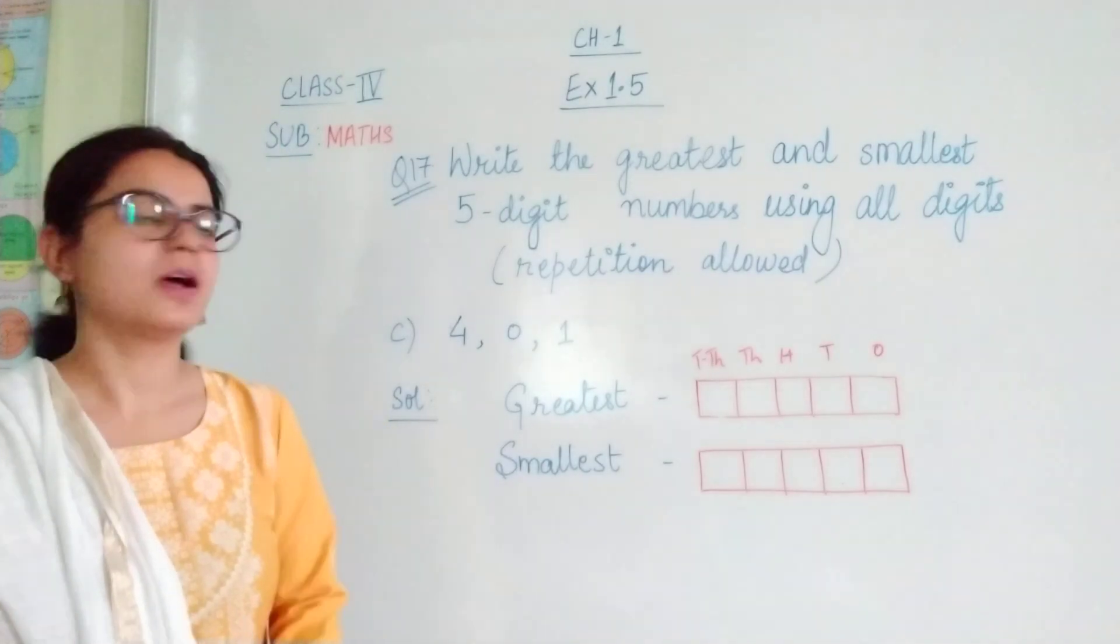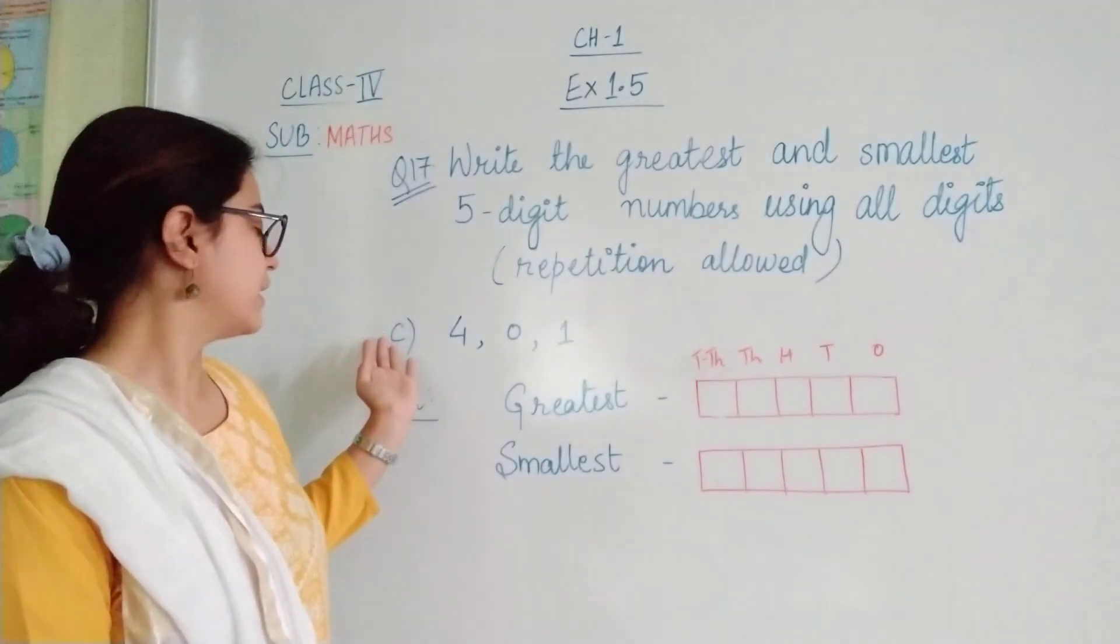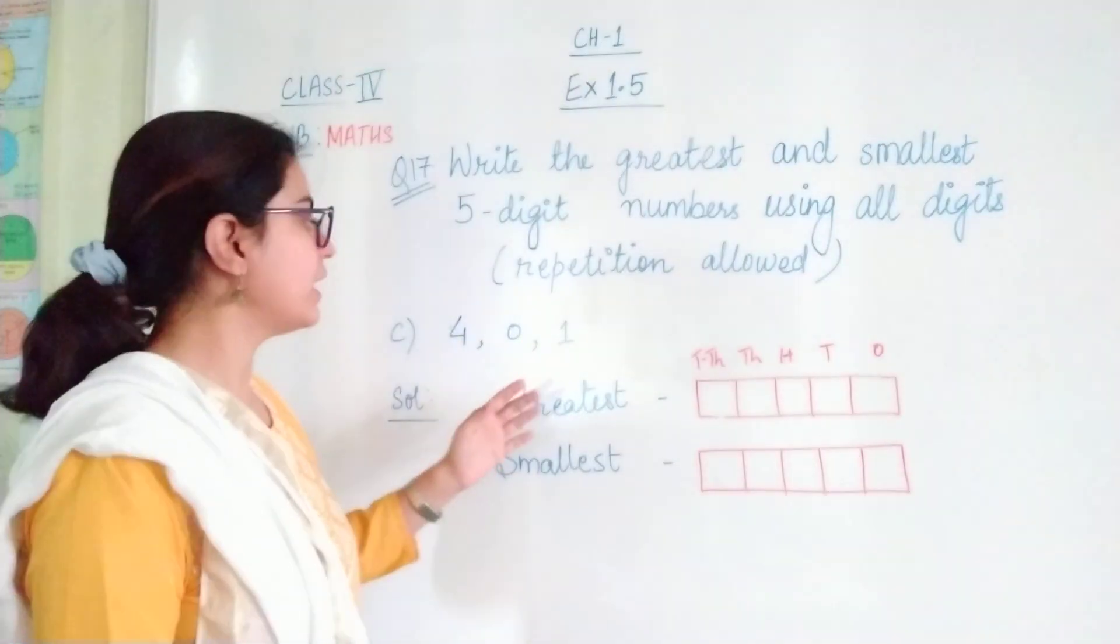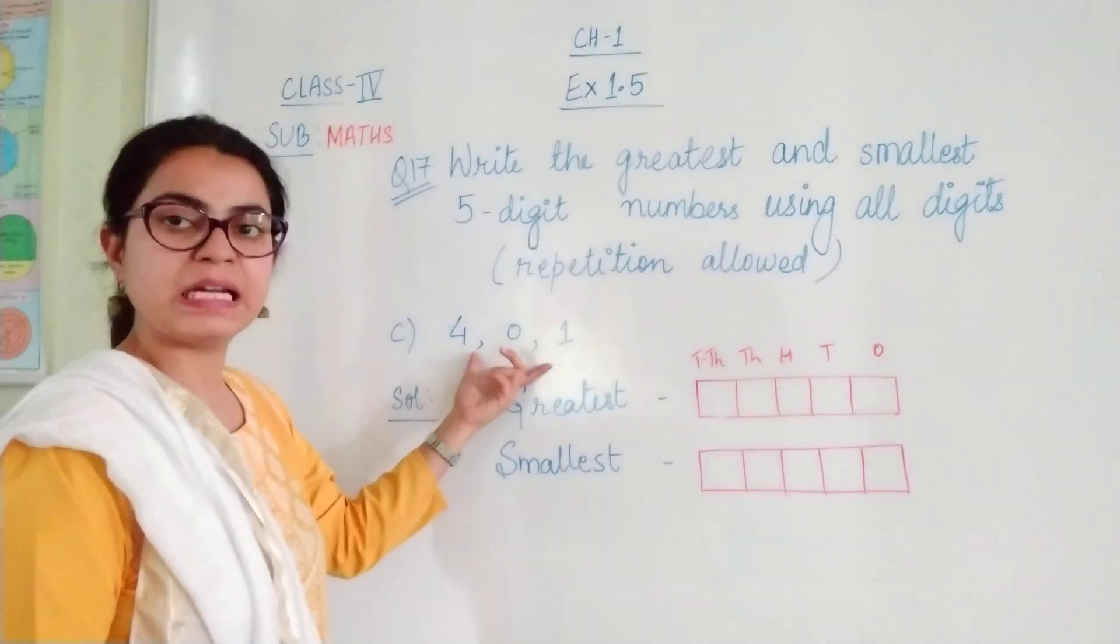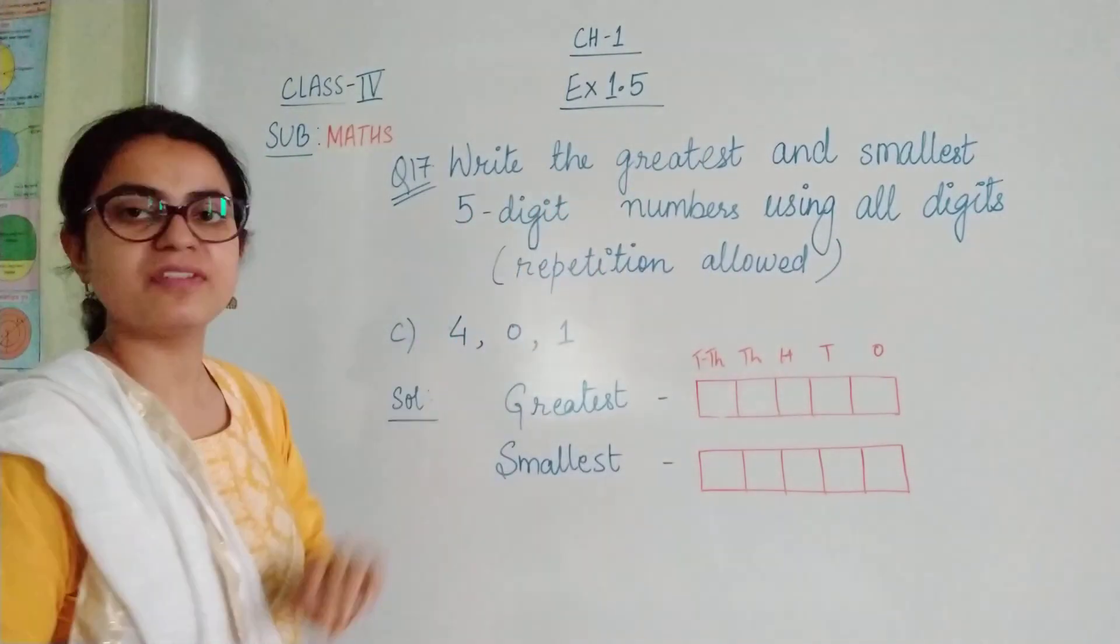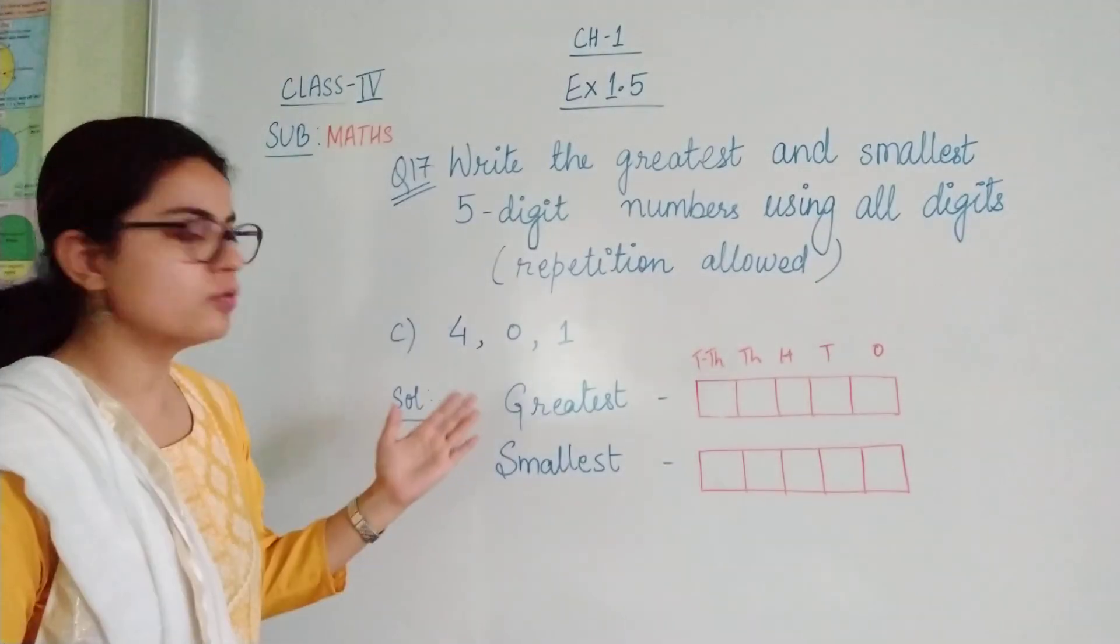Students, we have taken up another question that is C. Here we have 3 digits. With the help of these 3 digits and with repetition we have to form the greatest and smallest 5-digit number. The rules are the same.